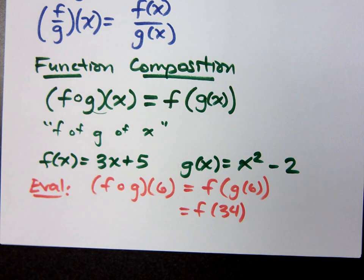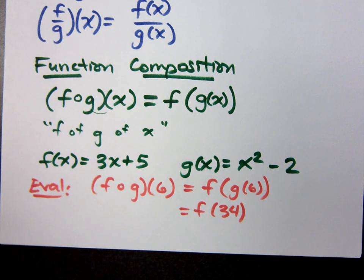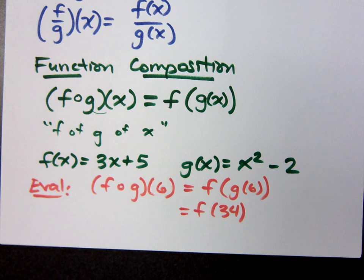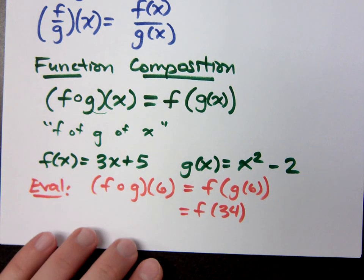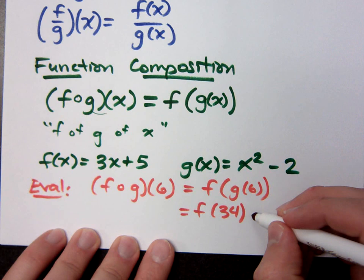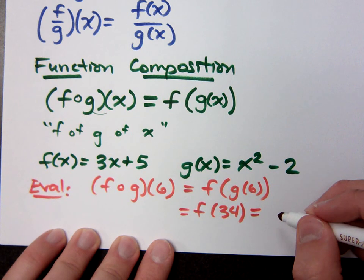So I'm not plugging 6 into f. I plugged 6 into g. I stuffed 6 into g, and I got something, right? And what am I going to do with that? Stuff it into the other function, f. So what's f of 34? 107.